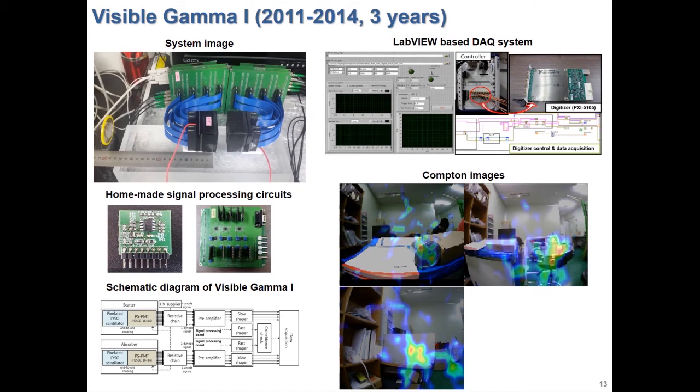Also, we made a coincidence-based DAQ system based on LabVIEW program. Using the Visible Gamma 1, we can get the distribution of radioactive materials in the uranium specimen with the visual image.